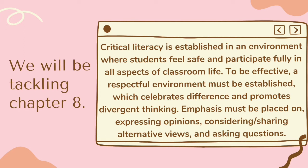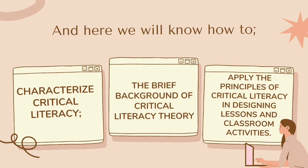Chapter 8 talks about critical literacy. Critical literacy is established in an environment where students feel safe and participate fully in all aspects of classroom life. To be effective, a respectful environment must be established, which celebrates difference and promotes divergent thinking. Emphasis must be placed on expressing opinions, considering or sharing alternative views, and asking questions. Here, we will know how to characterize critical literacy, the brief background of critical literacy theory, and apply the principles of critical literacy in designing lessons and classroom activities.